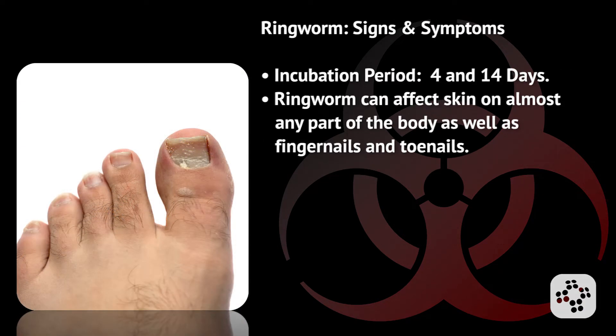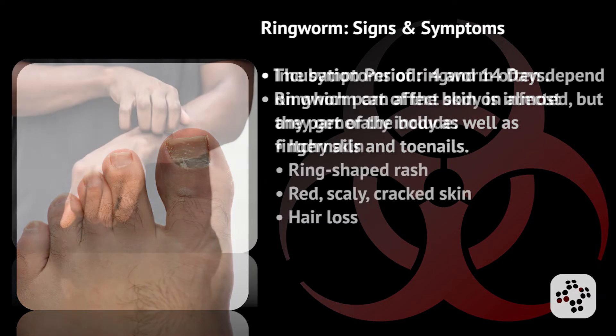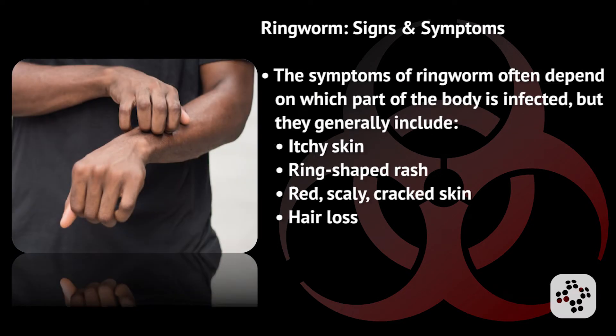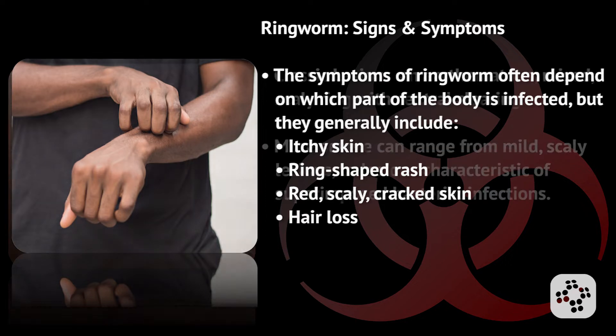With an incubation period of between 4 and 14 days, ringworm can affect skin on almost any part of the body as well as fingernails and toenails. The symptoms of ringworm often depend on which part of the body is infected, but they generally include itchy skin, ring-shaped rash, red scaly cracked skin, and even hair loss if the rash is where there are normal hair follicles.